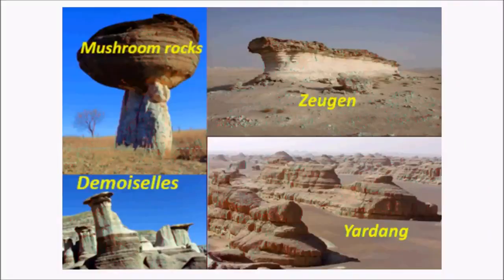Other arid rock features include zeugens, which are bigger versions of mushroom rocks, and yardangs, which are simply ridge-like structures found in semi-arid to arid regions forming continuous ridges. Yardangs are mostly seen in China, near the Gobi Desert.